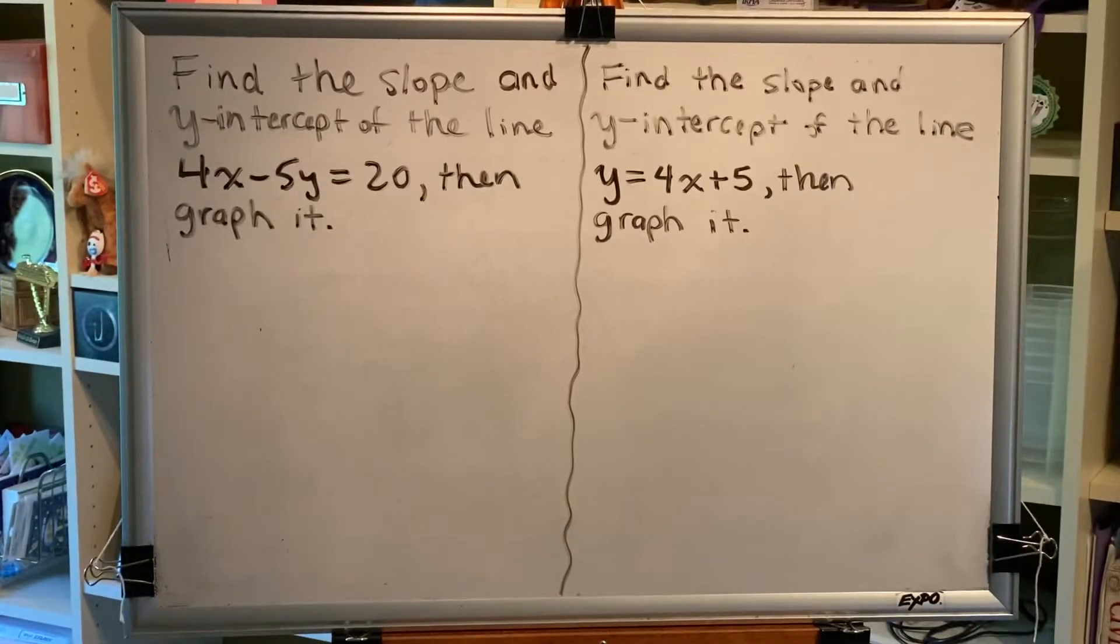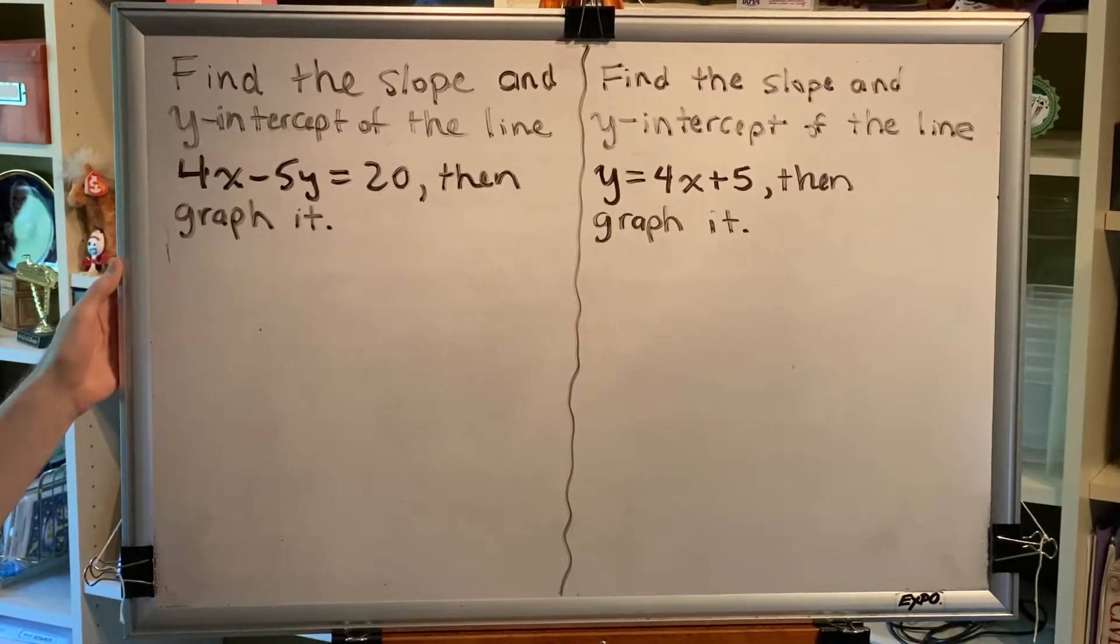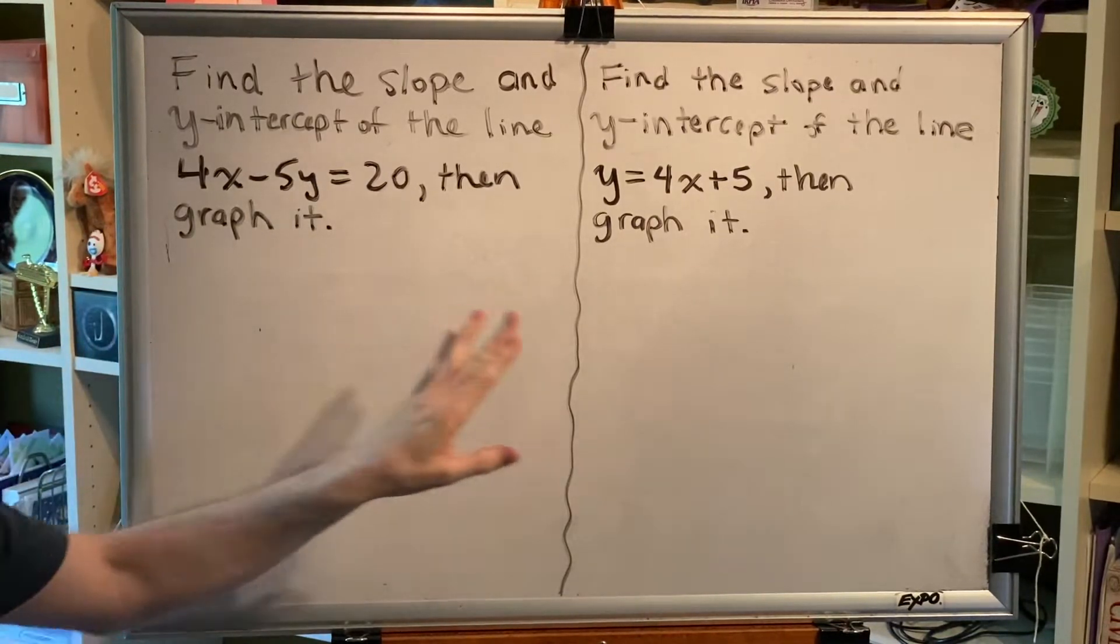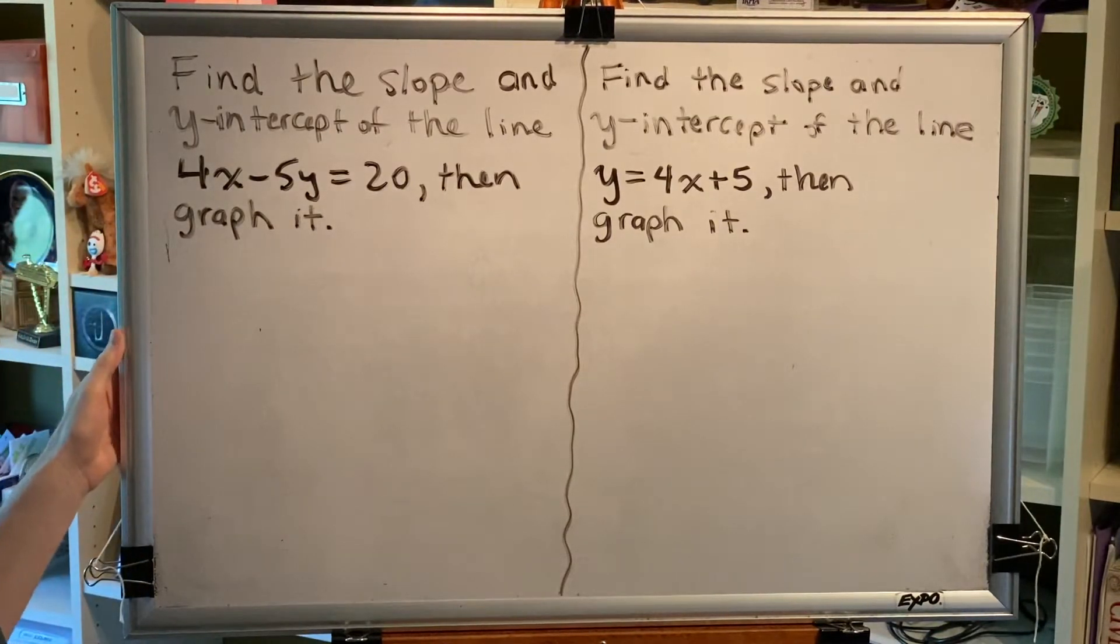The topic of this video is properties of tilted or slanted lines. Let's look at two problems. First, find the slope and y-intercept of the line 4x minus 5y equals 20, then graph it. When we're done with that, find the slope and y-intercept of the line y equals 4x plus 5, then graph it.